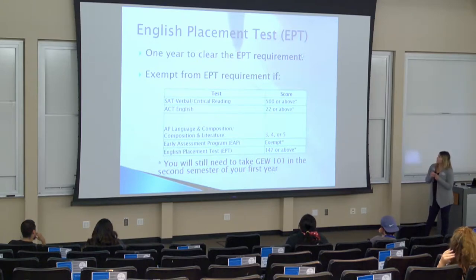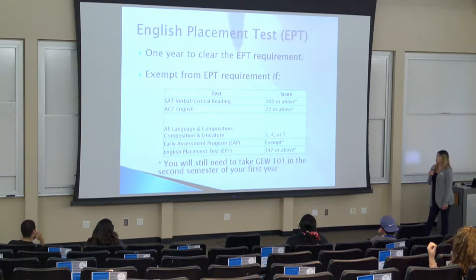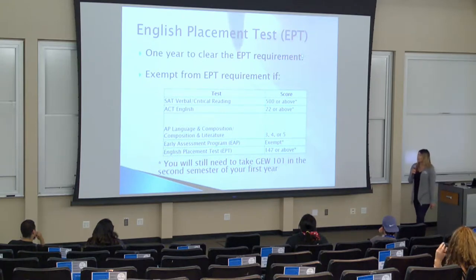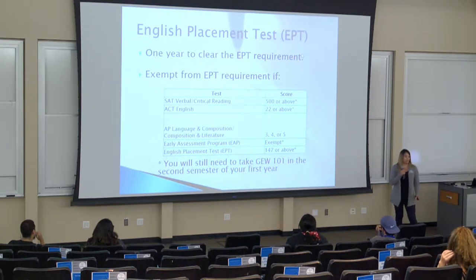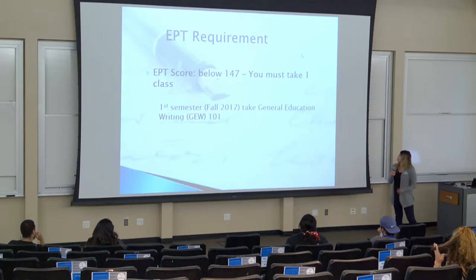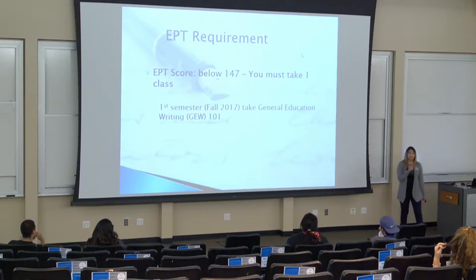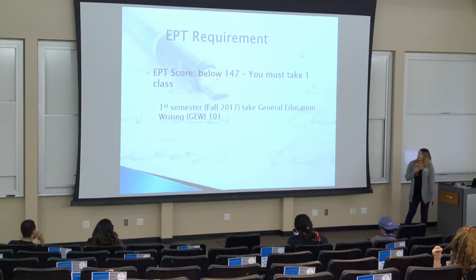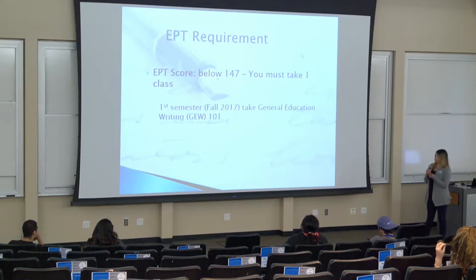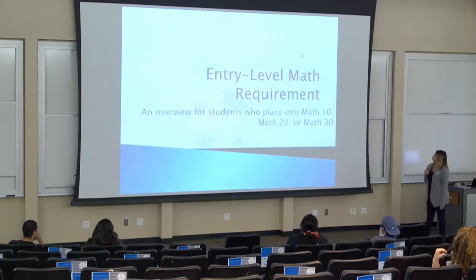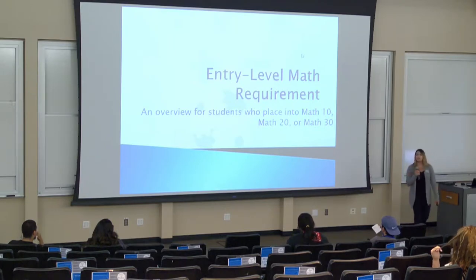There are ways to exempt you from taking the EPT requirement — if you score a certain number on the SAT, ACT, AP classes, EAP, or obviously the EPT itself. If you score below 147 on the EPT, you must take GW 101 in the fall semester.